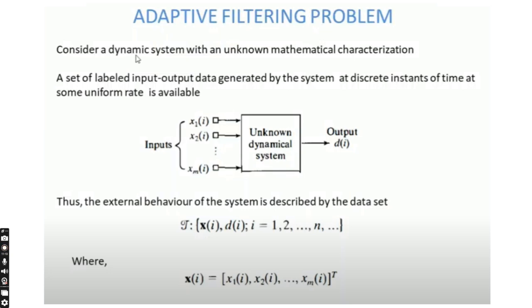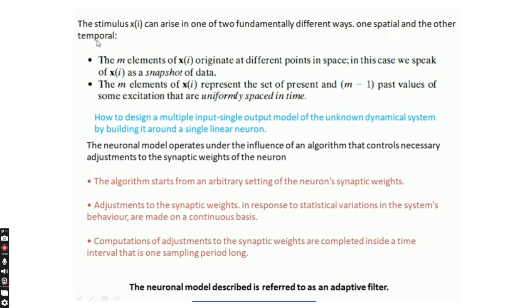The input vector xi can be interpreted in two fundamentally different ways: one is spatial and another one is temporal. If the m elements of xi represent the set of present values and the m minus one past values of some variable uniformly spaced in time, then it is called temporal. The two different types of stimulus are spatial-based and temporal-based.